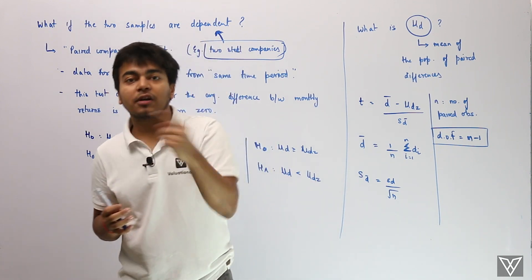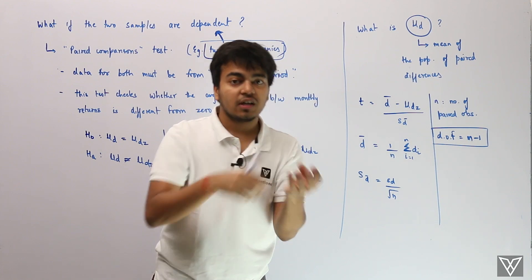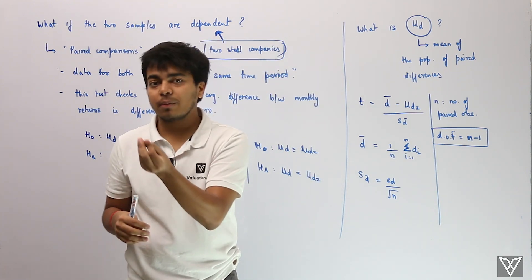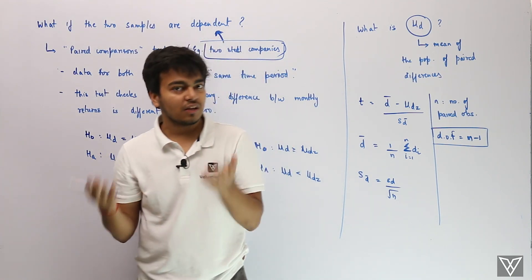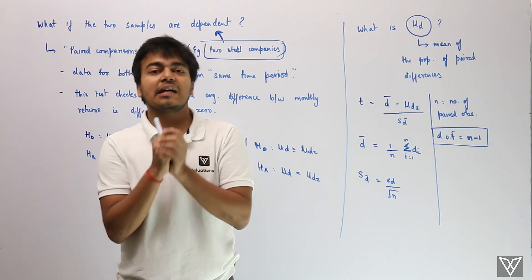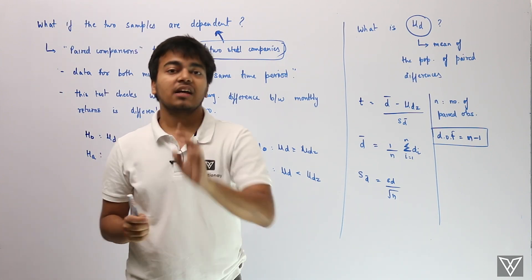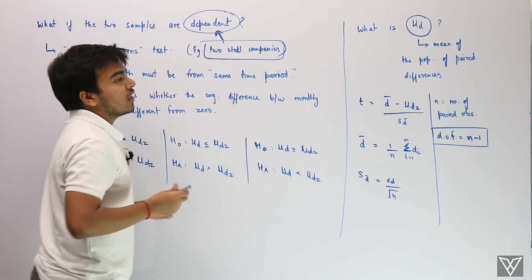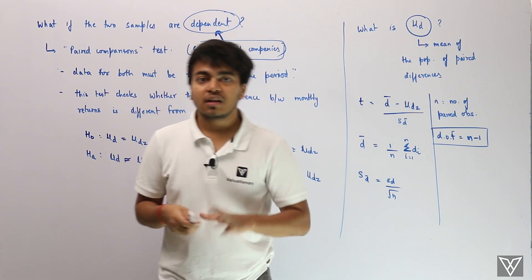Why would they be dependent on each other? Because whatever factors influence one steel company, 99% of the time the same factors affect the other steel company as well. Since they belong to the same industry, it is very likely that they are impacted by the same set of factors — and therefore we say these two series are dependent.